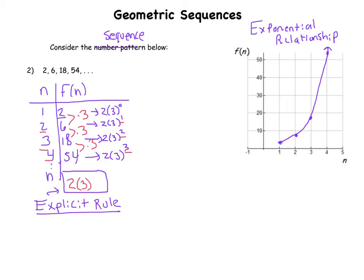So I'm gonna put 2 to the n minus 1, and so that is our explicit rule: f of n is equal to 2 times 3 to the n minus 1. So now if I want to know the 50th term, the hundredth term, I can just plug those numbers in and I'll know what they are.